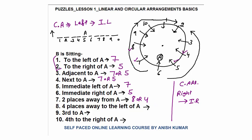Four places away to the left of A: one, two, three, four — that is seat number ten. Third to A: on the right side, seat five is first, seat four is second, seat three is third. On the left side, seat seven is first, seat eight is second, seat nine is third. So third to A is seat number three or nine. In summary, linear and circular arrangement have almost everything the same, except that in circular arrangement 'left' means immediate left and 'right' means immediate right. Thank you.